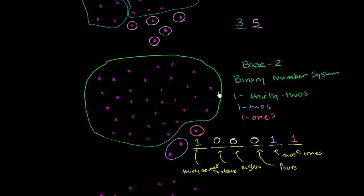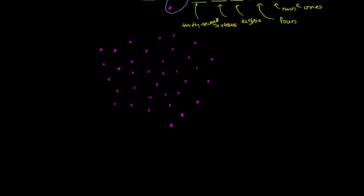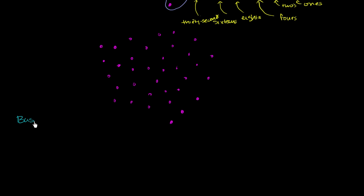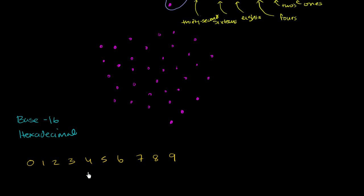Now what I want to do is take it to the next level. Base 2 has fewer digits than what we're used to in the decimal number system. What happens if we had more digits? So let's go to base 16 — this is fascinating — base 16, or a hexadecimal number system. Here we're going to have 16 digits: all of the traditional digits — 0, 1, 2, 3, 4, 5, 6, 7, 8, 9 — that's 10 digits. But now we're going to extend, so instead of reusing these digits to represent 10, we represent 10 with an A, 11 with a B, 12 with a C, 13 with a D, 14 with an E, and 15 with an F.